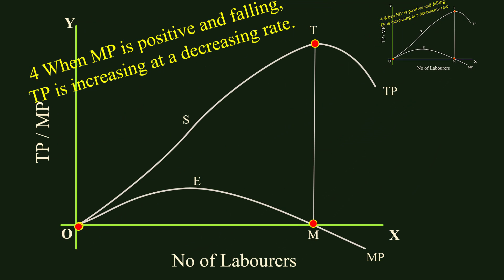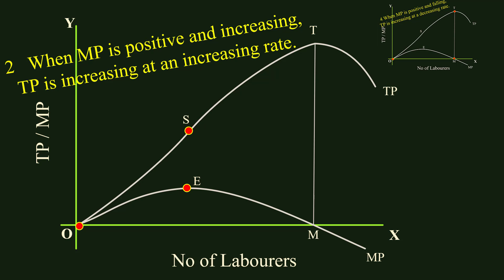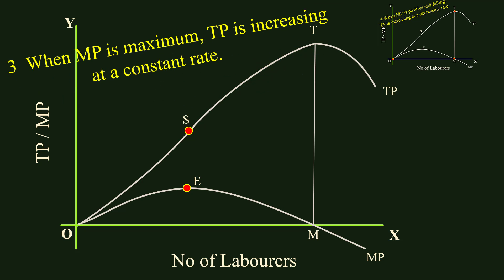Second relation: when marginal product is positive and increasing, total product is increasing at an increasing rate. In the segment OE, the marginal product curve is positive and increasing. Corresponding to this, segment OS on the total product curve shows total product increasing at an increasing rate. Third relation: when marginal product is maximum, total product is increasing at a constant rate. At point E, marginal product is maximum; at point S, total product is increasing at a constant rate.